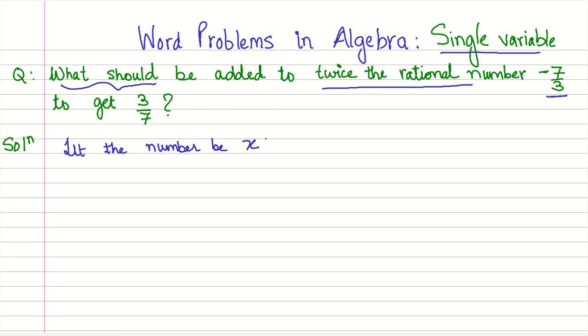This is the first step, we determined the unknown and we call it as x. Now let us try to form the algebraic equation. So it says that what should be added to twice the rational number minus 7 by 3 to get 3 by 7.